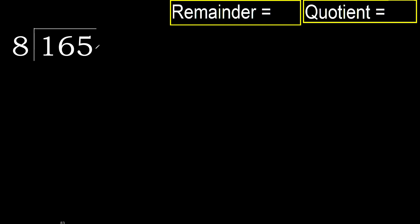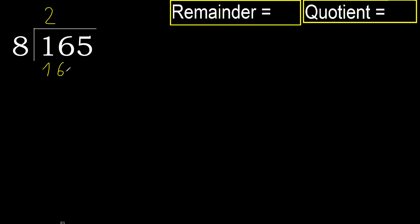165 divided by 8. 1 is less, therefore next. 16 is not less, therefore work with 16. 8 multiplied by which number is nearest to 16 but not greater? 8 multiplied by 3 is greater. 8 multiplied by 2 is 16. 16 is not greater — ok.